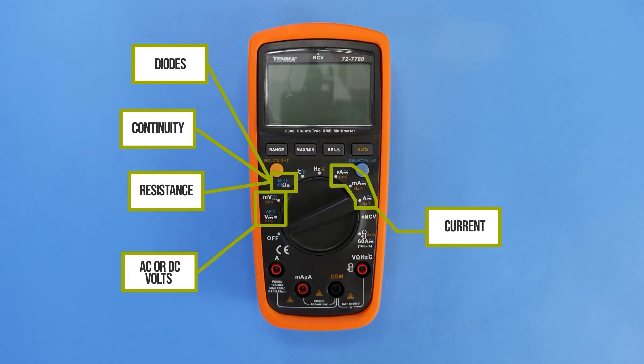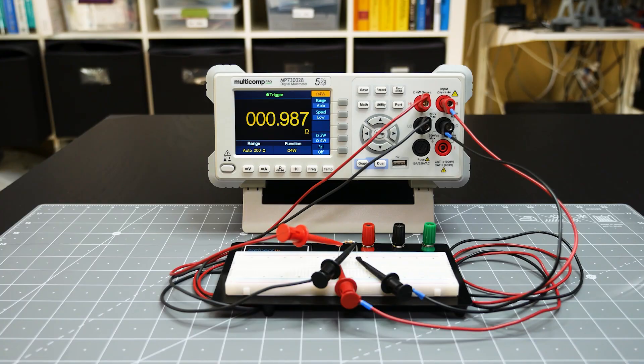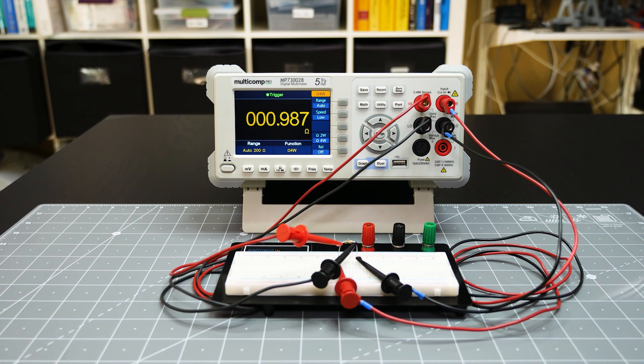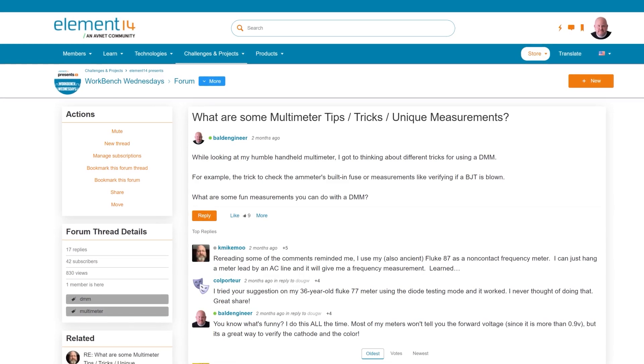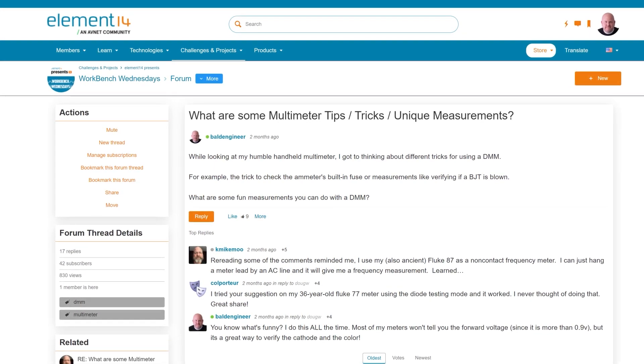In previous episodes, we covered basic DMM usage, looked at continuity mode in depth, and talked about the difference between two-wire and four-wire measurements. Even though I am not going to cover much on the basics in this video, I think anyone can still pick up some ideas about how DMMs work and a few ways to use them. By the way, I put these great tips together with the help of the Element 14 community. Check below for a link to that discussion.